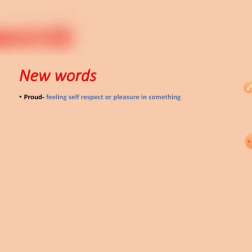New words from the poem. 'Proud' — P-R-O-U-D — feeling self-respect or pleasure in something. Sentence: I am proud of my country. 'Noble' — N-O-B-L-E — someone with a very good character.